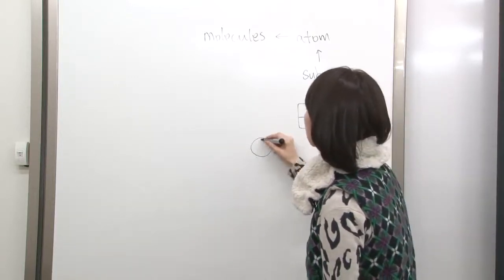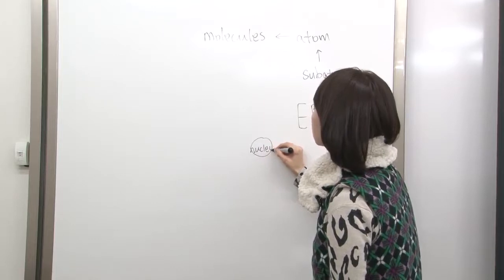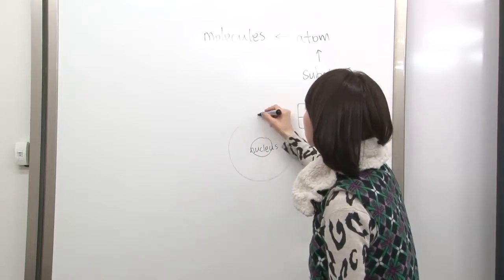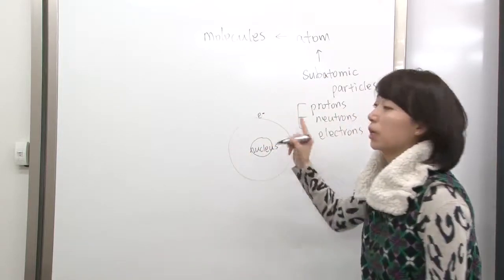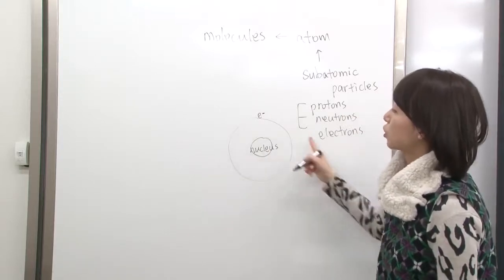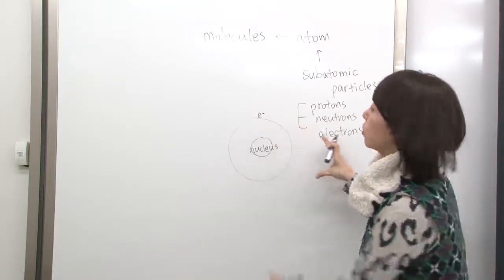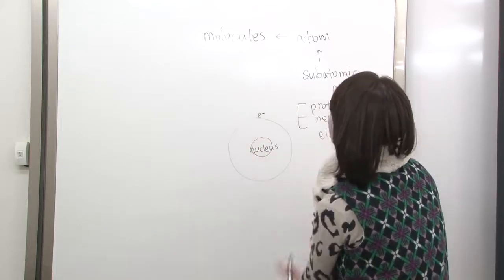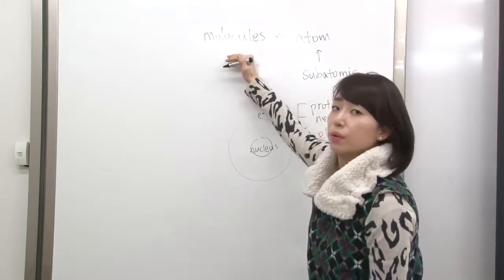If you actually look at the atomic structure, it looks like a nucleus at the center, and you have electrons orbiting around the nucleus like this. This is the atomic structure. When two different atoms come together, they form a big chunk of compound. That is called molecule.